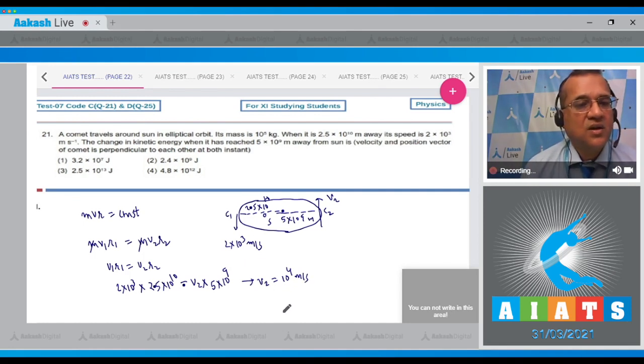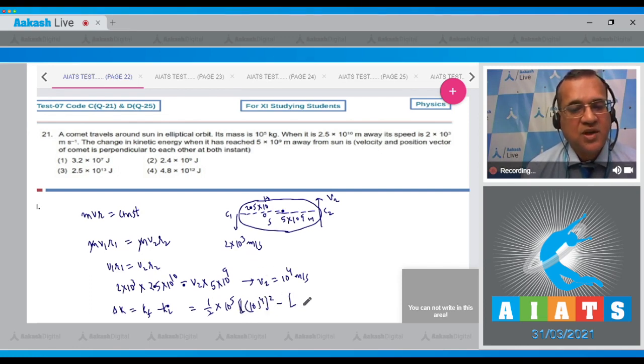Now the question asked is what is the change in kinetic energy? So change in kinetic energy is final kinetic energy minus initial and that is equal to 1 by 2 times the mass times 10 to the power of 4 whole square, minus the initial speed that was equal to 2 into 10 to the power 3 whole square. So this will give you the change in kinetic energy which is equal to 4.8 times 10 to the power 12 Joules. So the correct option is answer 4 to this question.